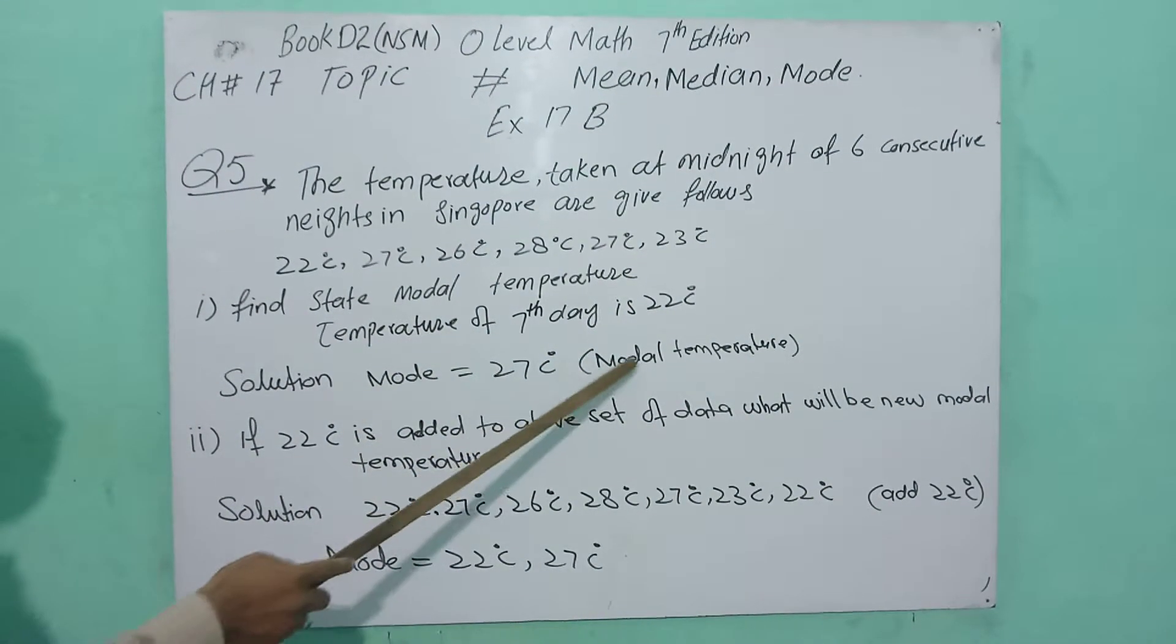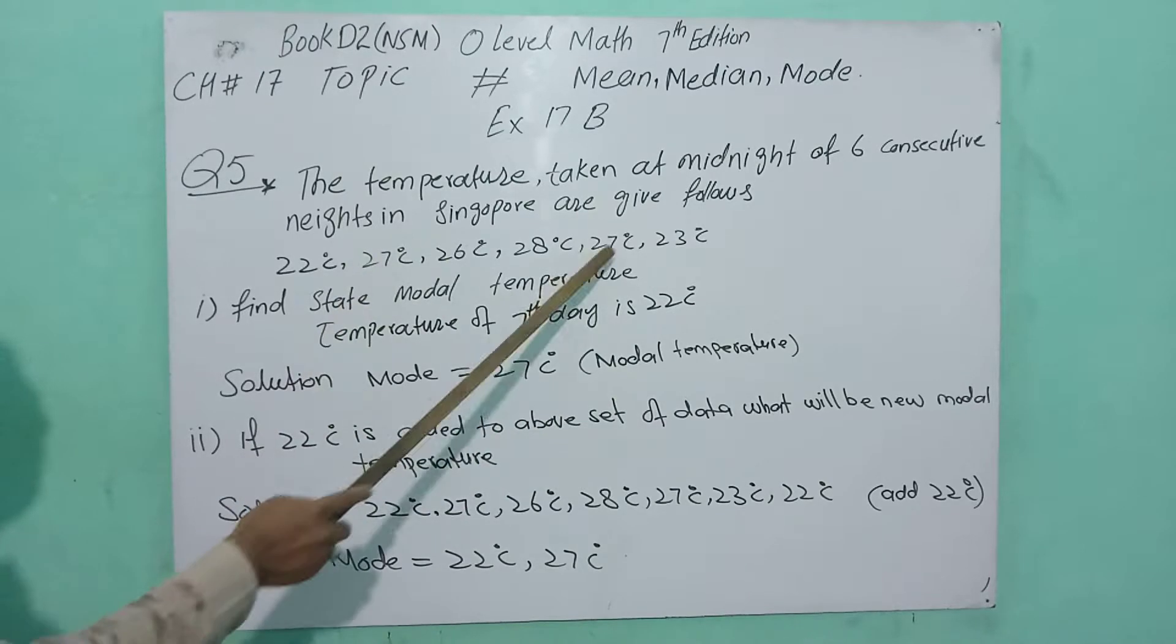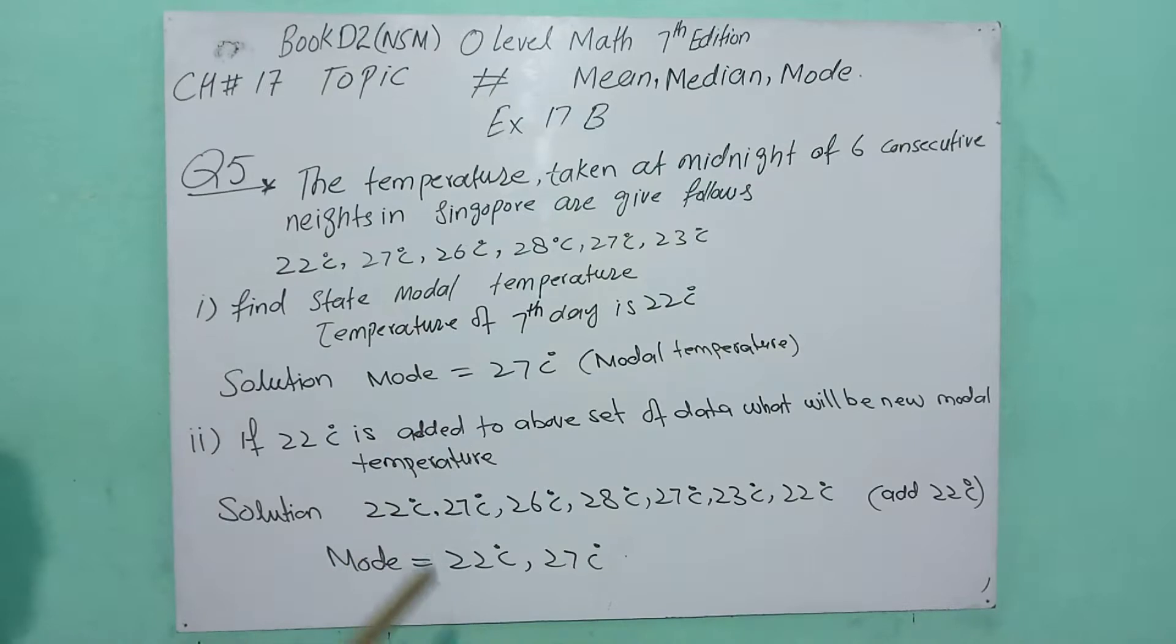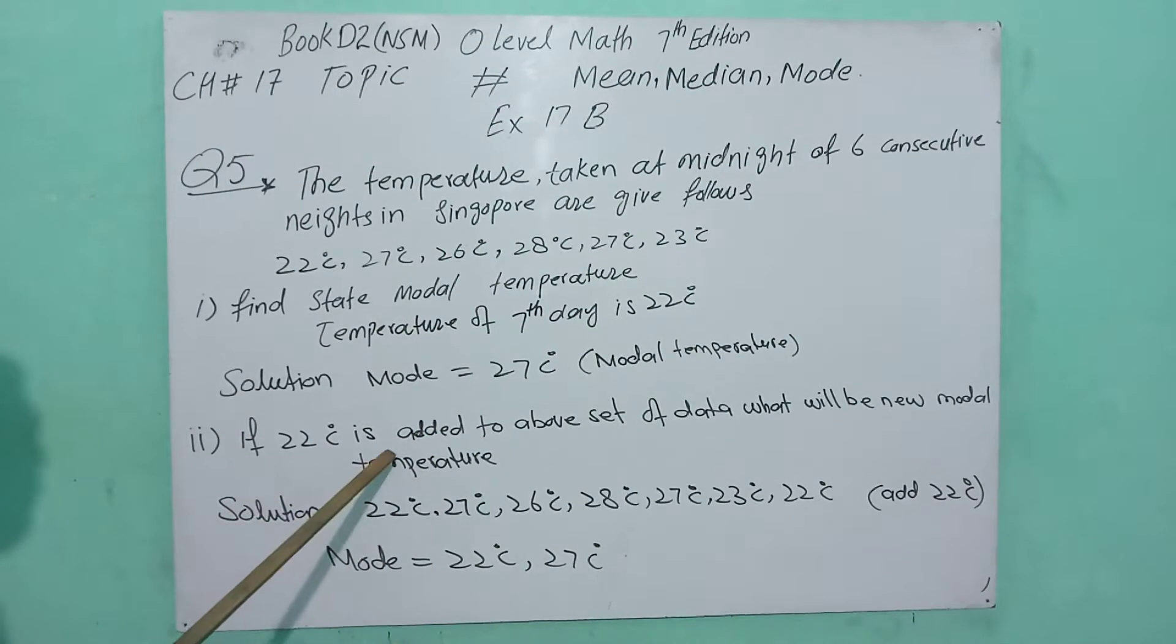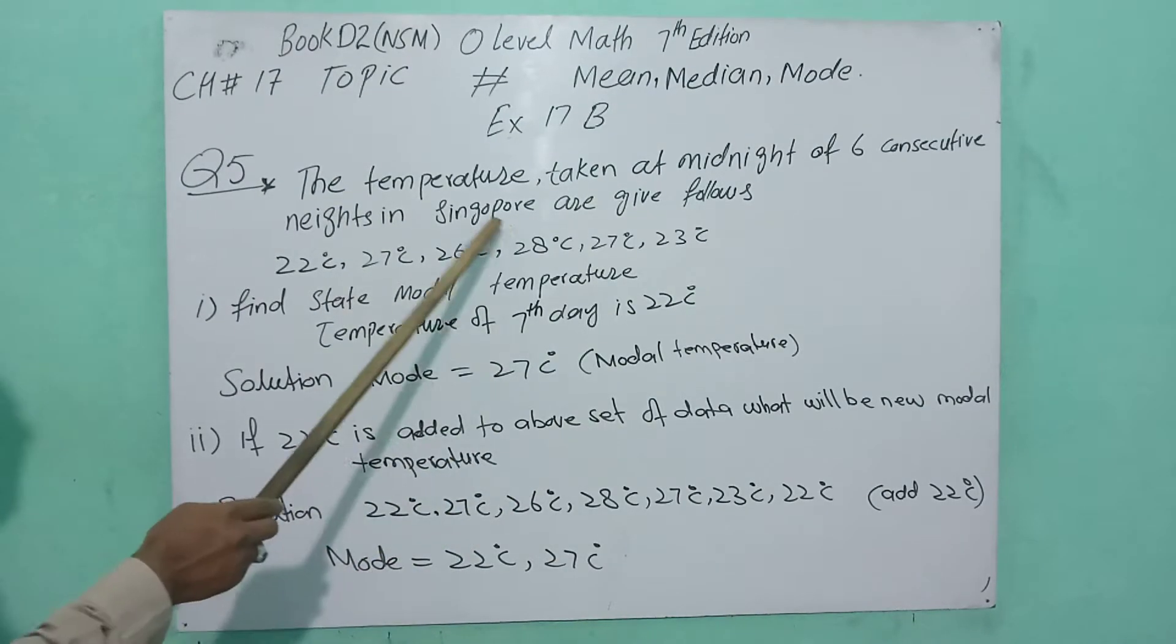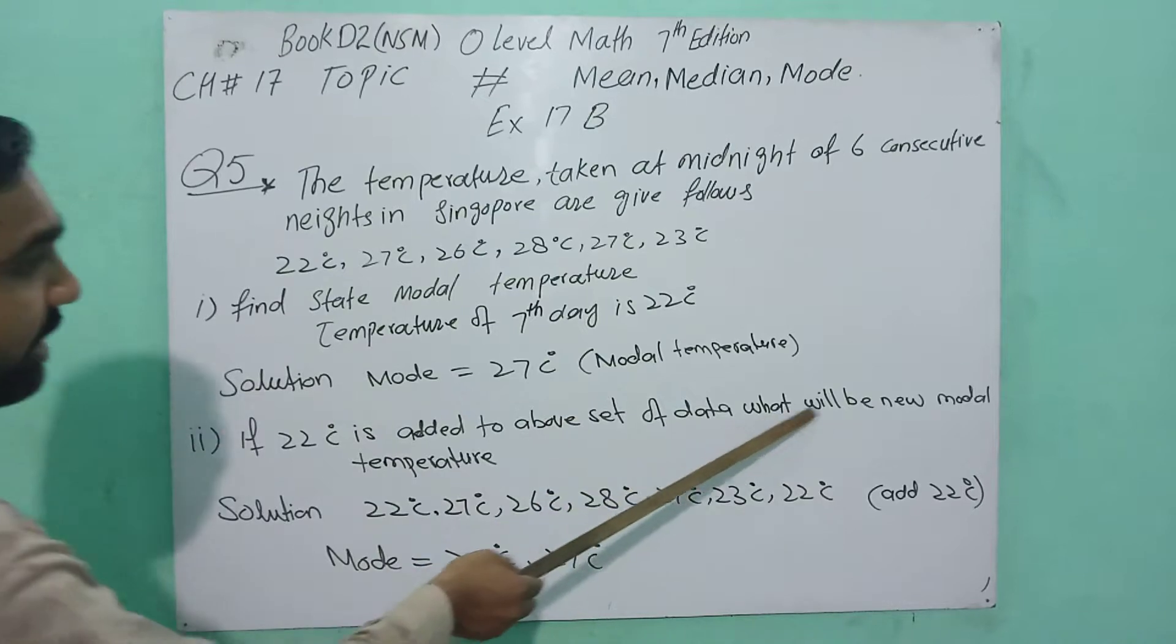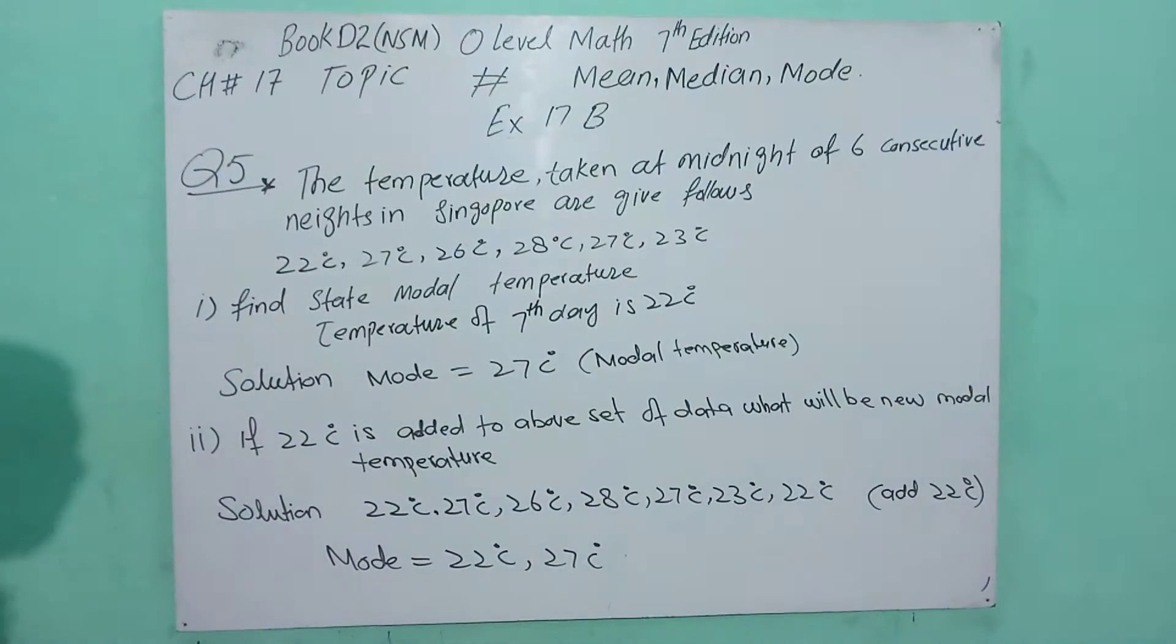27 is the mode because it repeats two times. If 22 is added to our dataset, what will be the new modal temperature?